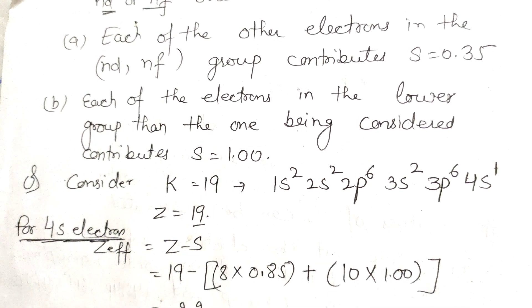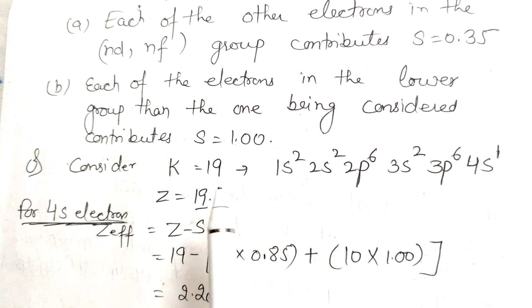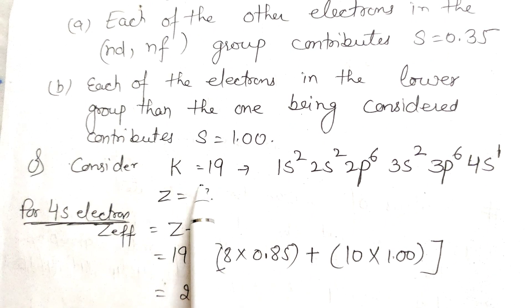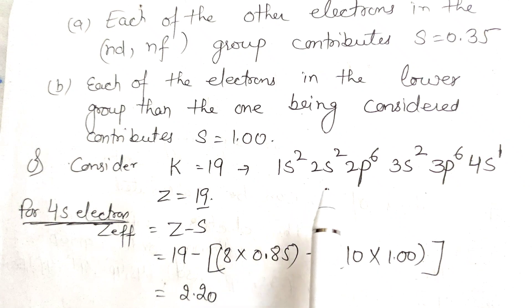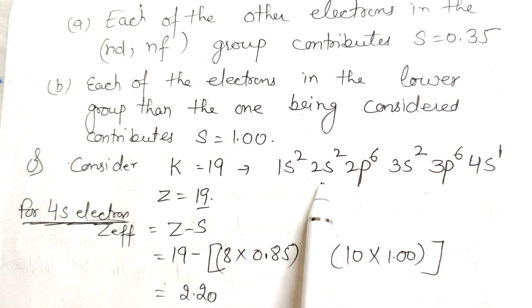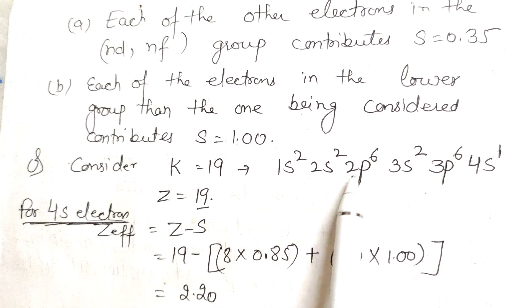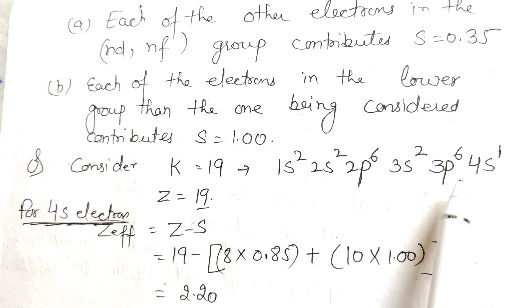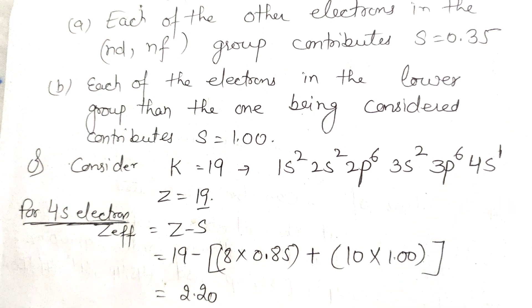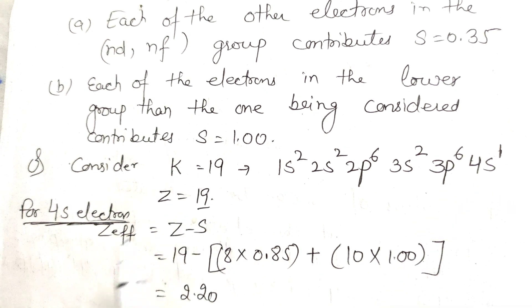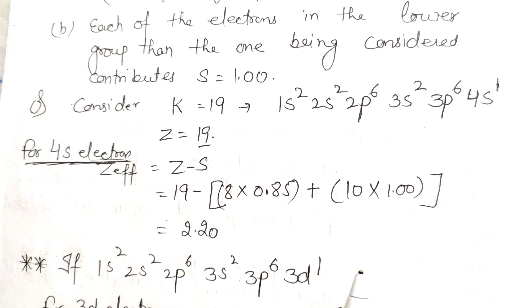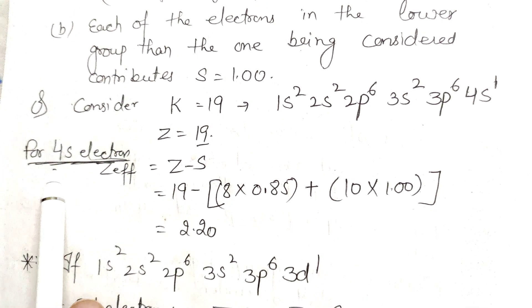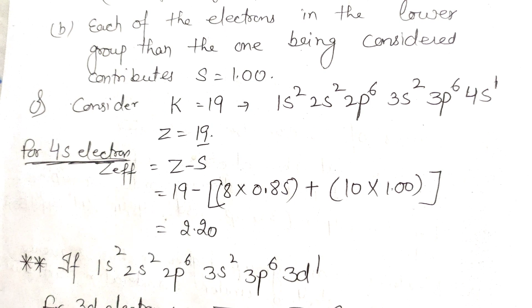Let's consider an example of potassium, whose atomic number is 19. The electronic configuration is 1S², 2S², 2P⁶, 3S², 3P⁶, and 4S¹. The value of Z for potassium is 19. We want to calculate Z_effective for the 4S electron.